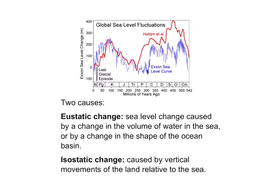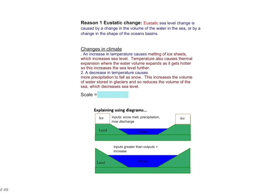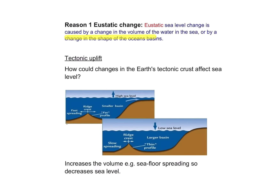Thinking about sea level, there are two types: eustatic and isostatic change. Eustatic sea level change is caused by the volume of water in the sea or a change in the shape of the ocean basin. Isostatic change is caused by vertical movements of the land relative to the sea. For eustatic change, an increase in temperature causes melting of ice sheets, while a decrease means more precipitation falls as snow, obviously increasing the volume of water. Tectonic uplift lifting the crust increases volume, and sea floor spreading may also decrease sea level.